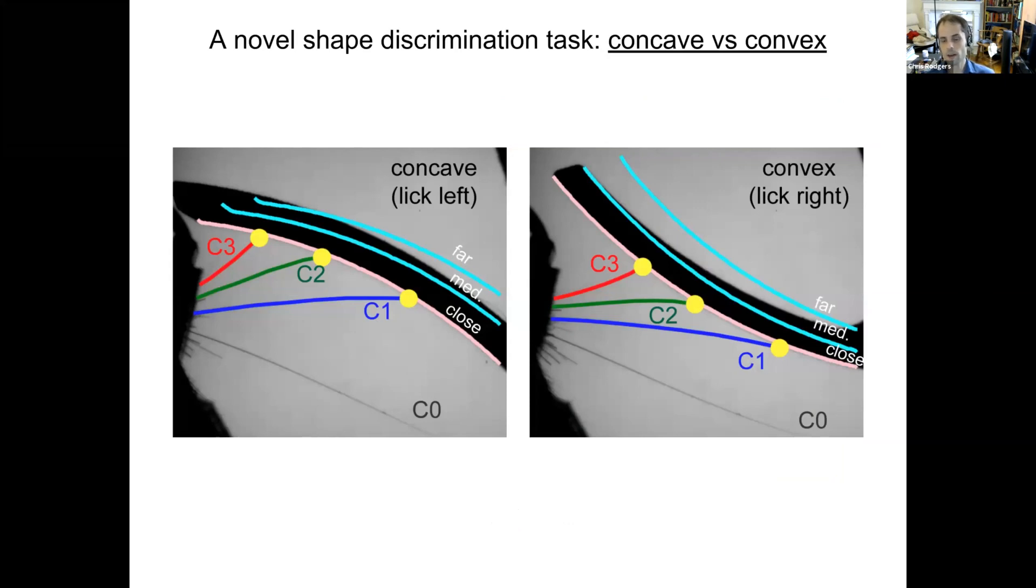And so to understand how that might work, I developed this shape discrimination task for head-fixed mice, and I used high-speed video to understand how they perform this task. What you're looking at now is two example frames from the high-speed video. The mouse's head is actually out of frame down here on the lower left. I've tracked the individual whiskers on the face. These whiskers are the same in basically all mice and they have names: C1, the long blue one; C2, the green one; and C3, the short red one in the front. The mouse's job is to make sense of the whisker contacts that he's making on the shape and use that to determine whether the shape is concave, as you see on the left, or convex, as you see on the right.